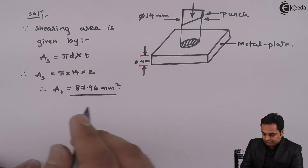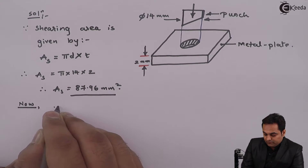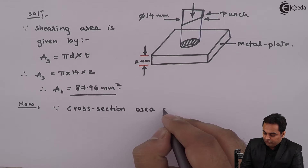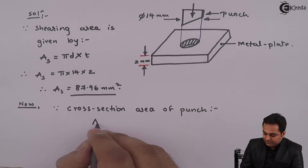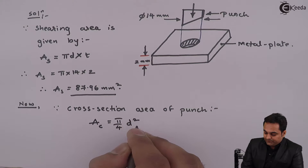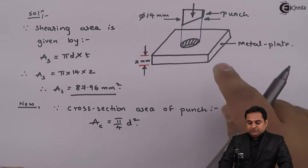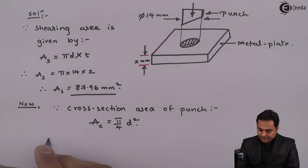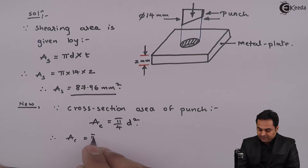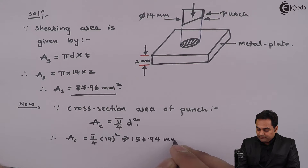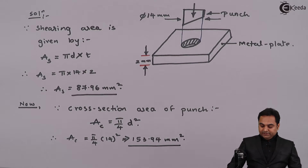Next I have to find how much area is compressed. The cross-sectional area of the punch, Ac, is equal to pi by 4 into D squared. I am getting the cross-sectional area of the punch because this punch would be subjected to compression. Therefore it is pi/4 × 14², which comes out to be 153.94 mm².